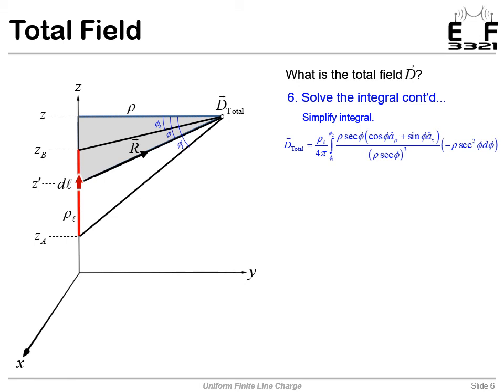So here's our big, ugly integral. And we want to simplify this so that we can solve it. Well, notice we have a bunch of rho secant phi's all over the place. It turns out they cancel. And so all we have to do is bring this negative sign to the outside of the integral. And our d phi ends up here. And now we have a much simpler integral. We can integrate this.